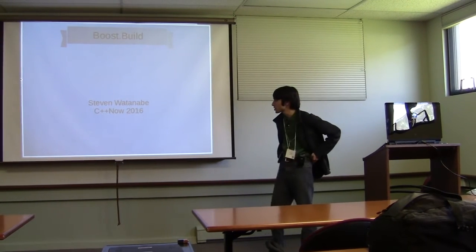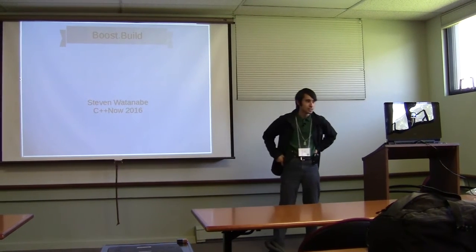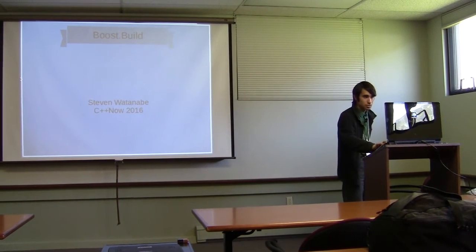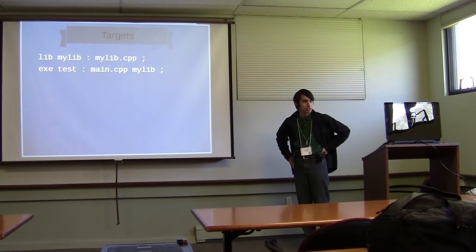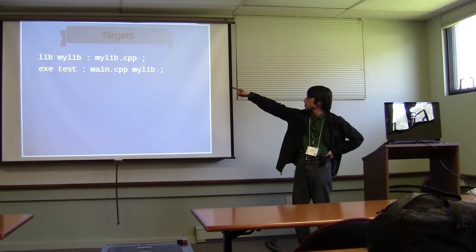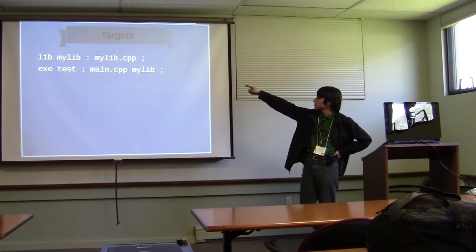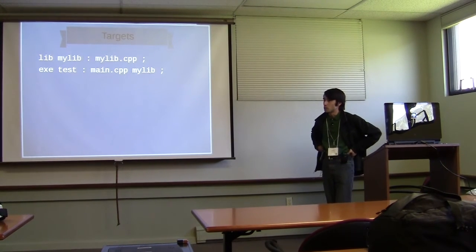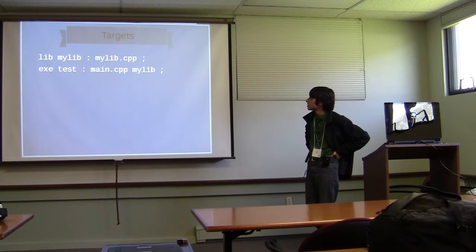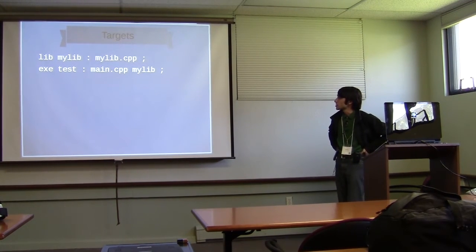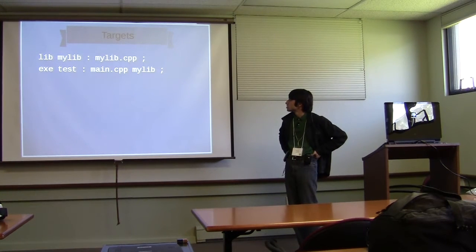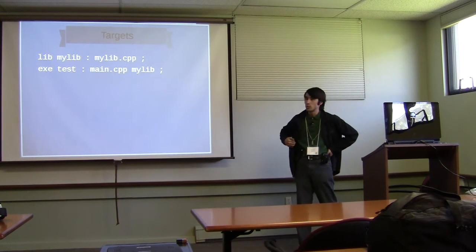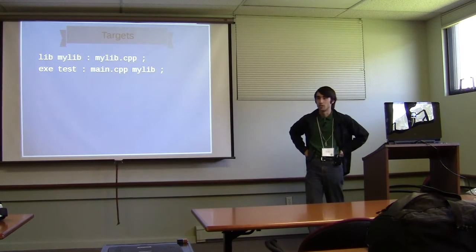I'm going to be talking about BoostBuild today. Let's start off with a simple example. Here we're creating a library using the lib rule, giving it a single source file with no special options. Then on the second line, you create an executable from a single source file, and it also links to the library. In BoostBuild, when we link to a library, you just list it along with other sources.